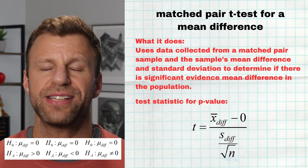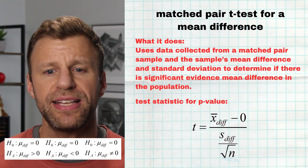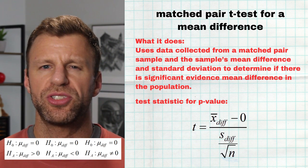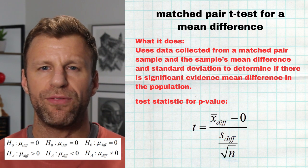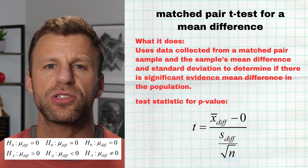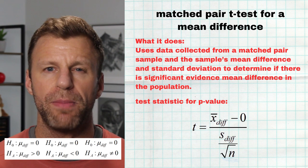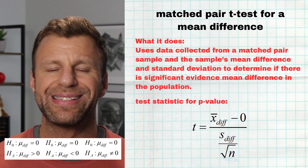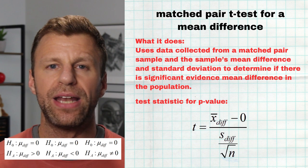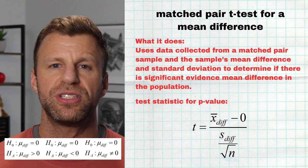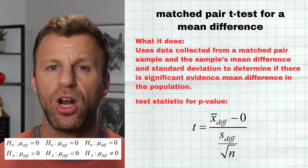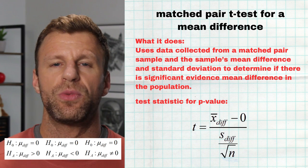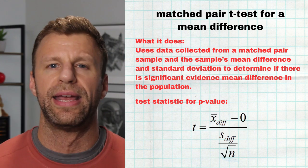The fifth type of significance test is a very special one: a matched pairs t-test for a mean difference. To recognize this, you have one sample that might look like two samples, but you're just measuring that one sample twice — like measuring a group of people before and after some treatment. We care about the difference, so we create one list of differences and focus on the mean of those differences. The null hypothesis is that the mean of the differences in the entire population is zero — no difference. The alternative is that there is a difference: greater than zero, less than zero, or simply not equal to zero. We use the sample mean difference to create our t-score and calculate our p-value.